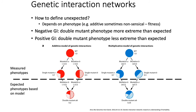A genetic interaction is defined as what you get when the phenotype of a double mutant is unexpected given the phenotypes of the individual mutants. An important question is: how do you define an unexpected phenotype? There are two basic models that people consider when computing what the expected phenotype of a double mutant is based on the single mutant phenotypes. The first is called an additive model of genetic interactions.